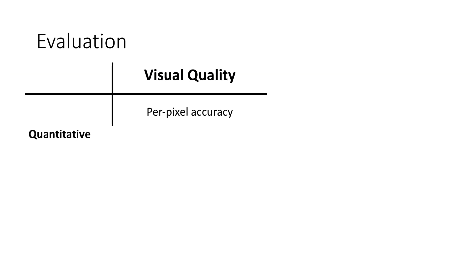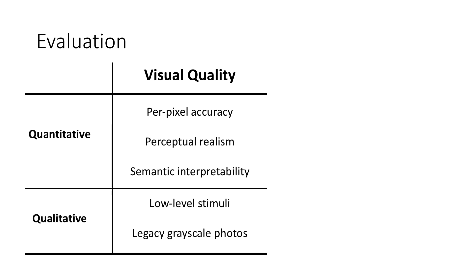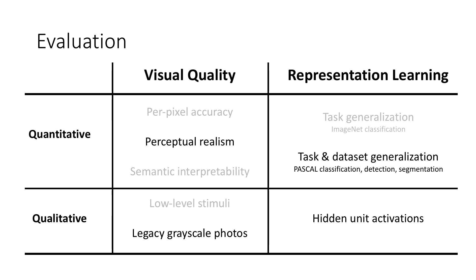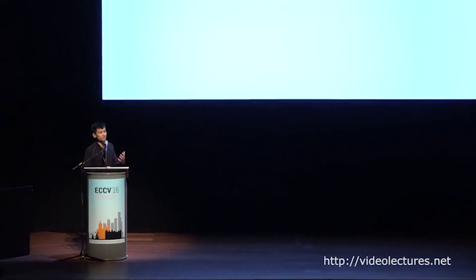One of our contributions is to carefully think about how to evaluate the colorization problem. Previous papers have used metrics such as per-pixel accuracy, which we evaluate as well, but per-pixel accuracy does not speak to the joint interaction between pixels or the overall perceptual quality we're shooting for. No metric is perfect, so we propose a number of them that get at different aspects of the problem. Our problem is an example of an image synthesis problem, and some approaches we propose can be applied to other image synthesis problems as well. We also evaluate the colorization task itself in its ability to produce strong representations. Please come to our poster for additional details.